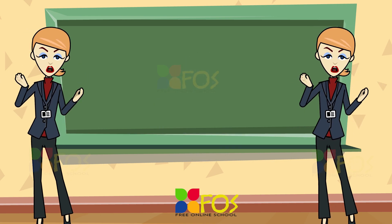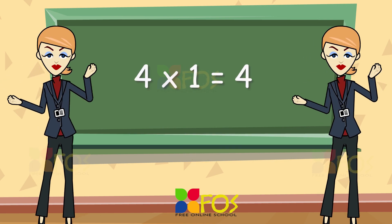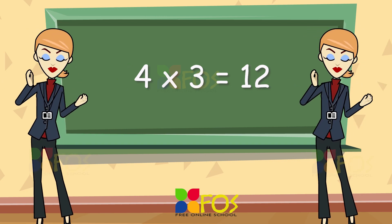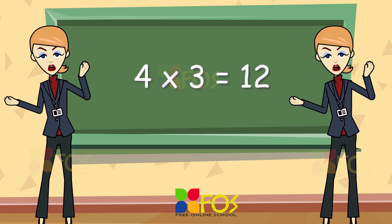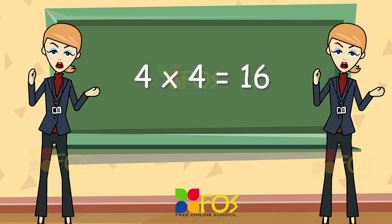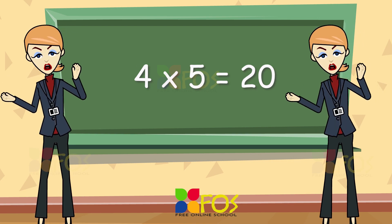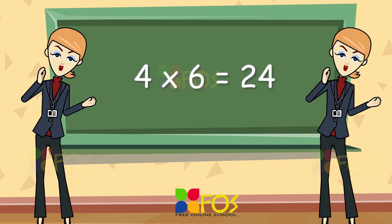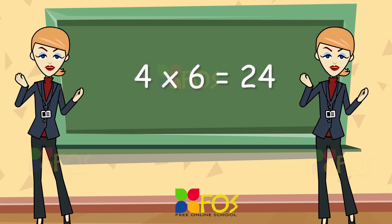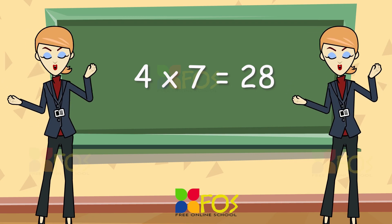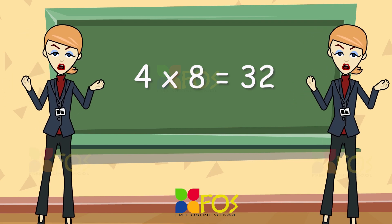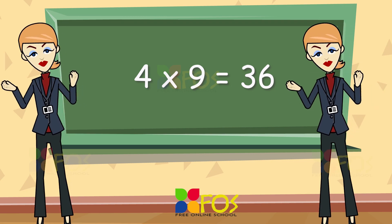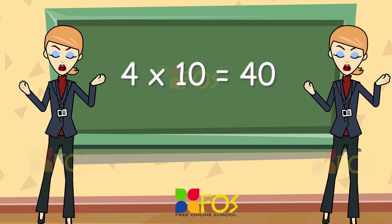Four ones are four. Four twos are eight. Four threes are twelve. Four fours are sixteen. Four fives are twenty. Four sixes are twenty-four. Four sevens are twenty-eight. Four eights are thirty-two. Four nines are thirty-six. Four tens are forty.